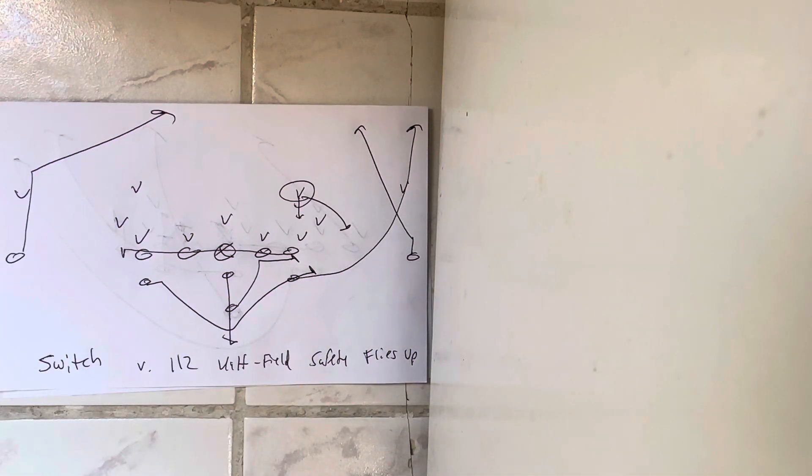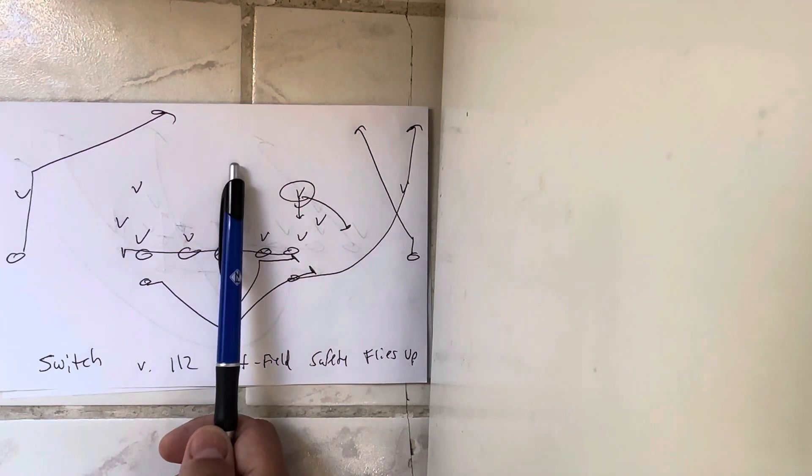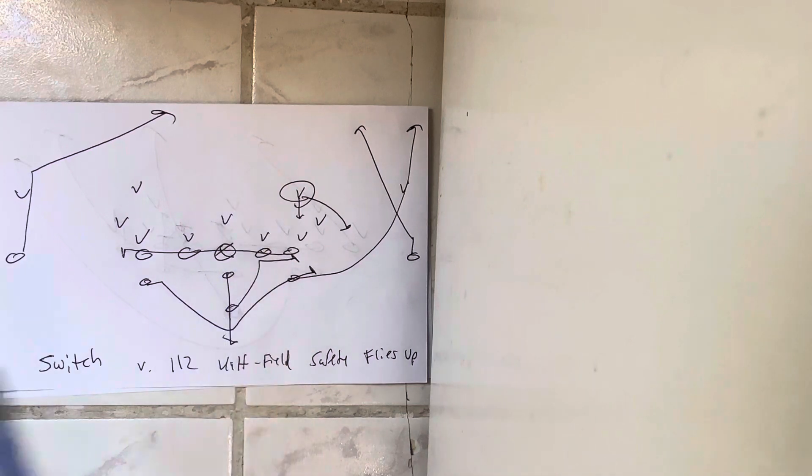The triple option offense passing game is based on taking advantage of corners, and the switch and tighten are the two concepts that do that. The only time you really want to take full advantage of a safety is when you have a midfield safety, a free safety that flies up.